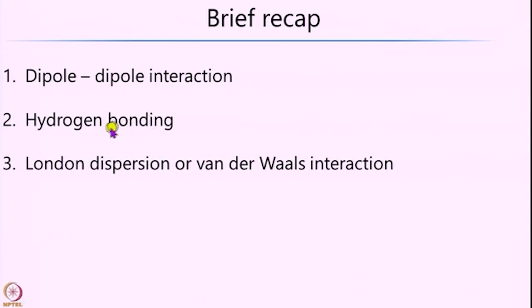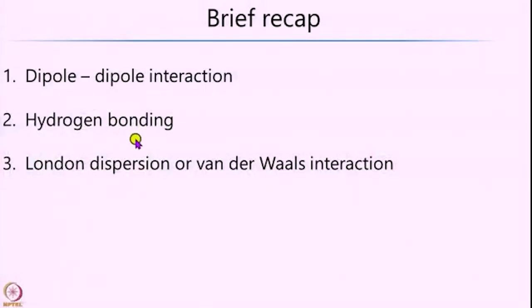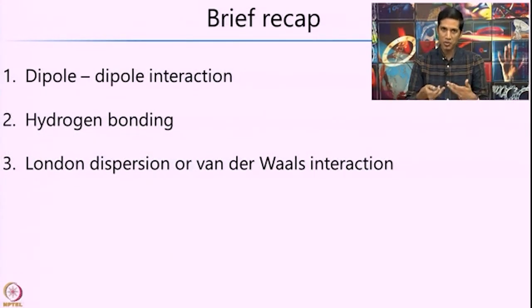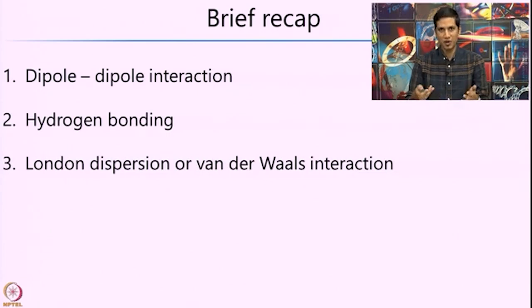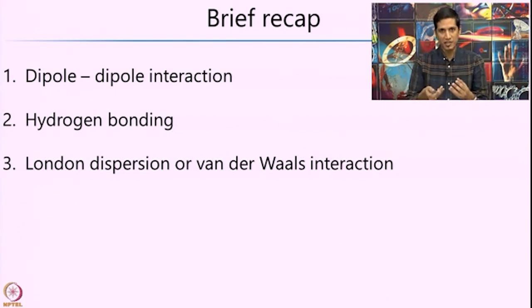Going further, we had looked at another important interaction called hydrogen bonding, which we described as a special case of dipole-dipole interaction because it has components of permanent dipole-permanent dipole interaction, and one can also invoke electrostatic interactions to explain hydrogen bonding. The exact decomposition is not very clear; however, what is known is that both electrostatic as well as dipole-dipole factors contribute towards hydrogen bonding, and this intermolecular interaction is ubiquitously found around us, from biomolecules to water.